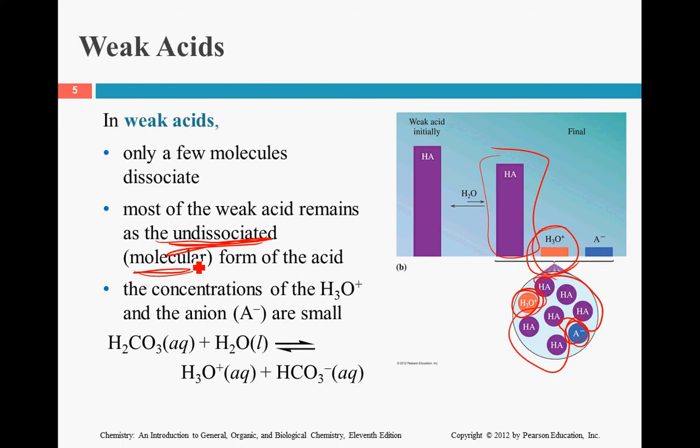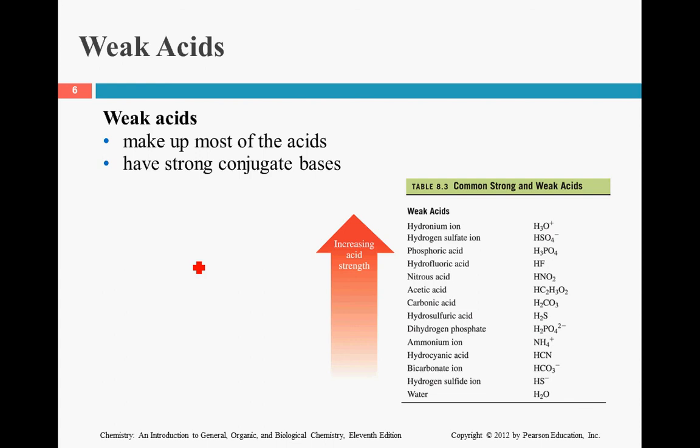Most of the weak acid remains undissociated. It remains as a molecule. It doesn't break apart. All of these are weak acids. Notice how many more weak acids there are than strong acids. Now, if it's a weak acid, that means it wants to have that hydrogen back, which means it's going to have a strong conjugate base. Slow to remove it, fast to get it back. Whereas the strong acids, we're happy to lose the hydrogen and they have no desire to get it back.